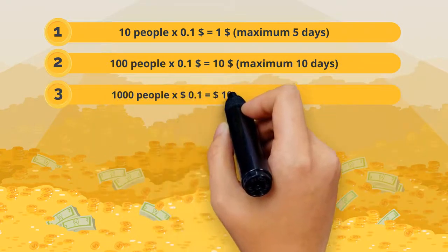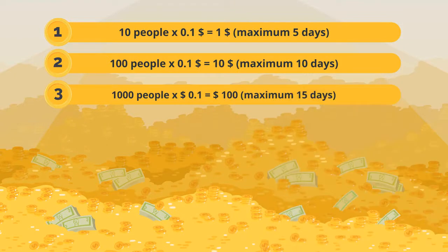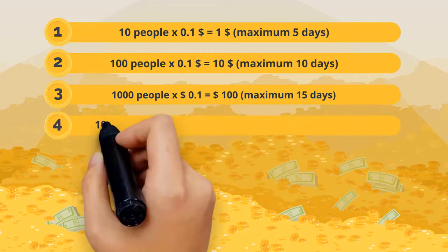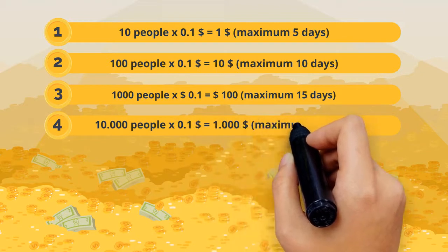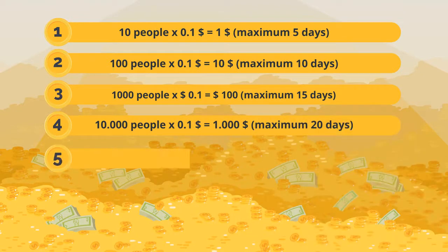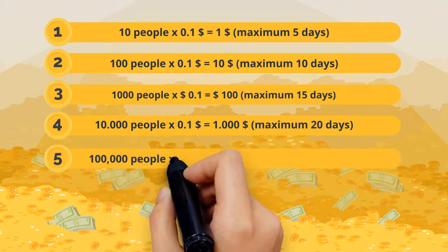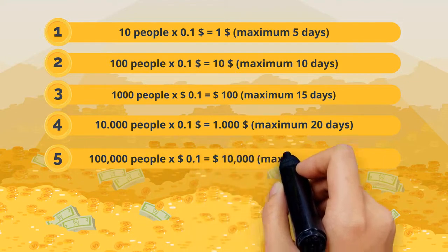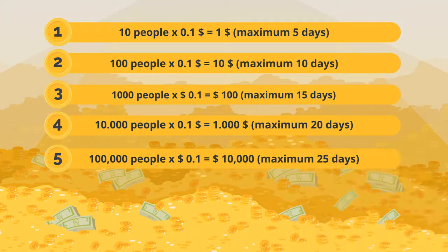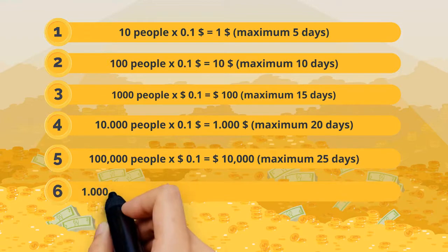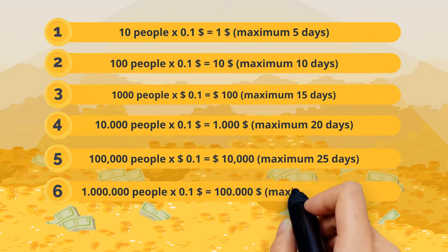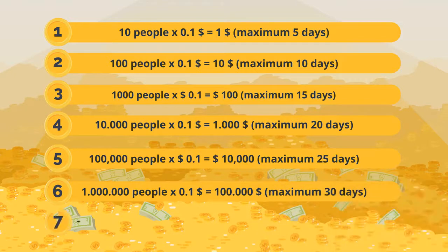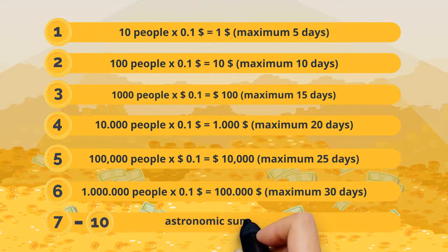Level 3: 1,000 people times 10 cents equals $100, maximum 15 days. Level 4: 10,000 people times 10 cents equals $1,000, maximum 20 days. Level 5: 100,000 people times 10 cents equals $10,000, maximum 25 days. Level 6: 1 million people times 10 cents equals $100,000, maximum 30 days. From level 7 to 10, you will get astronomic